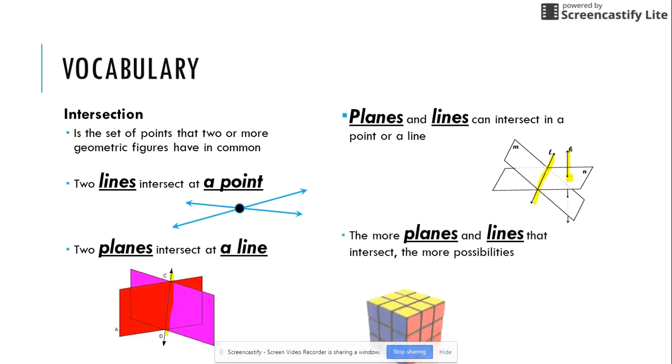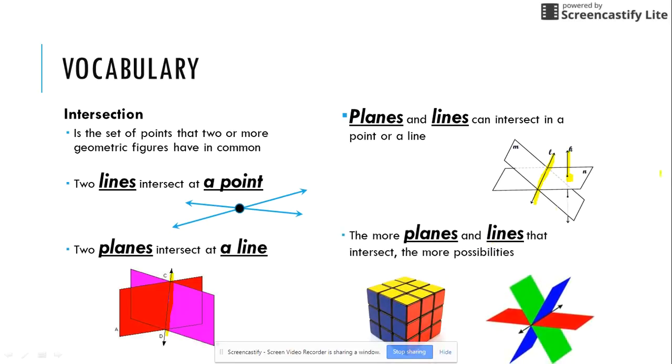The more planes and lines that intersect, the more possibilities that are created. If you look at this Rubik's Cube, I have three planes, the yellow plane, the blue plane, and the red plane that can intersect at a point. However, the blue plane and the red plane intersect at a line. The yellow plane and the blue plane intersect at a line. But here are three planes that intersect at a line. It really depends on the pictures, which is why I suggest that you get colored pencils to be able to trace the worksheets when you get them.